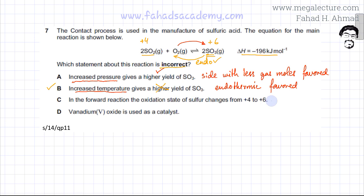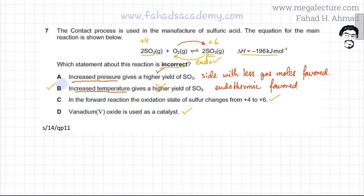The statement about vanadium pentoxide being used as a catalyst is also correct. So the only incorrect statement was option B, and since we were looking for an incorrect statement, option B is the answer.